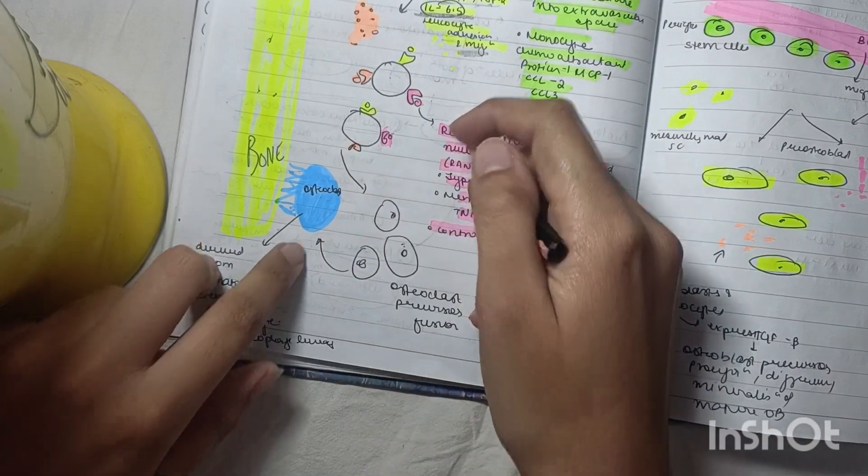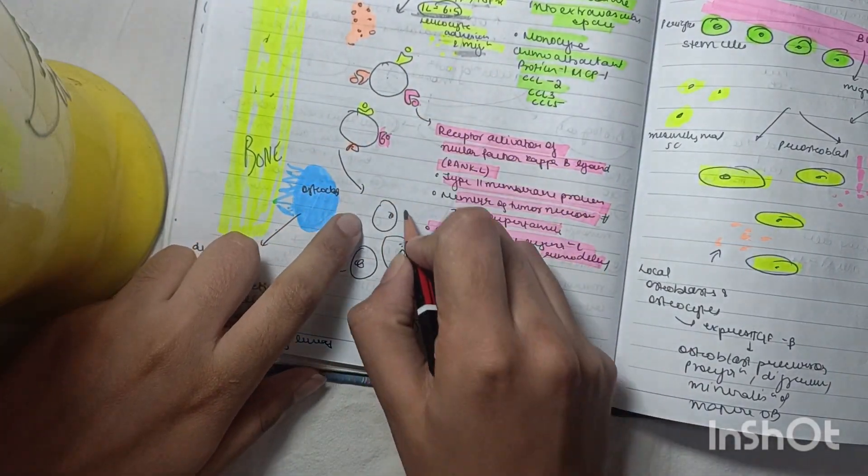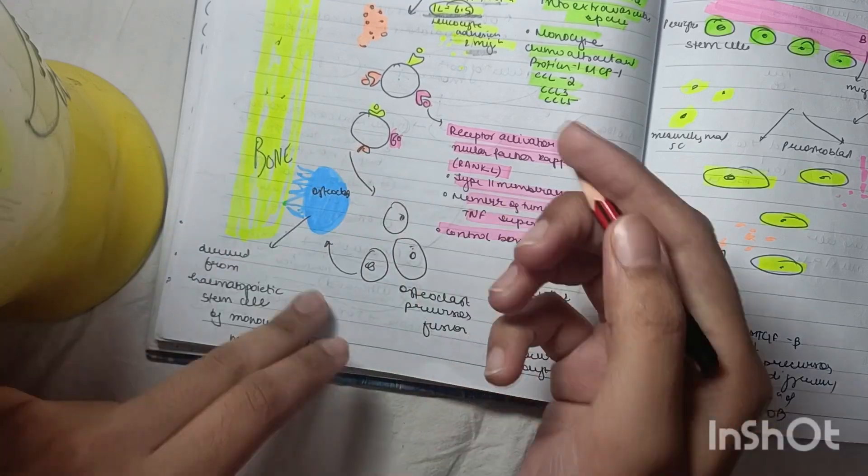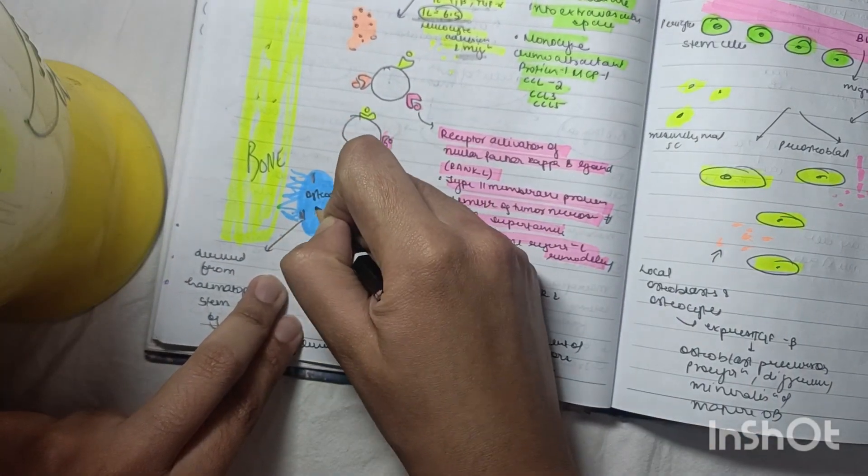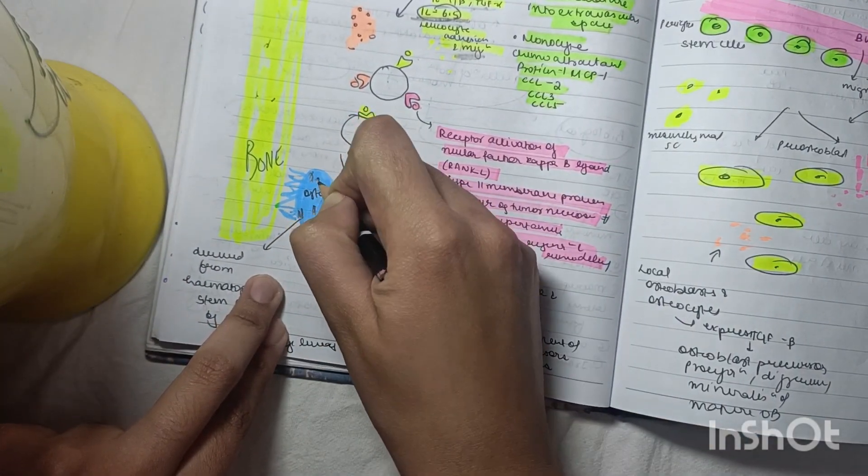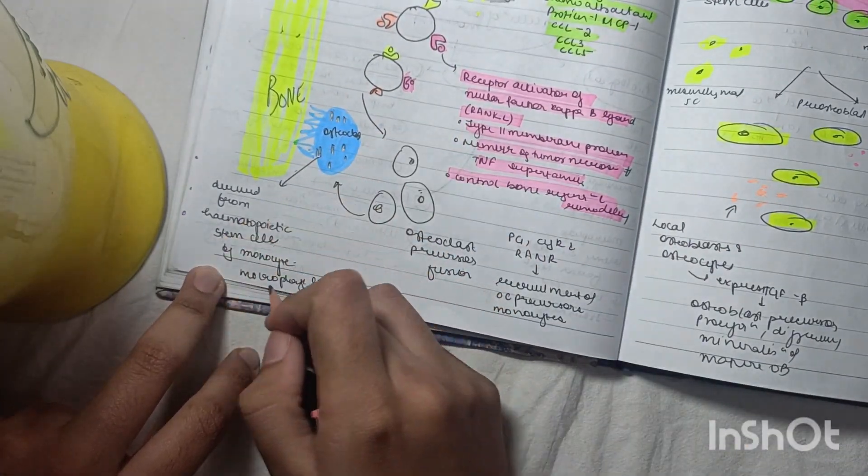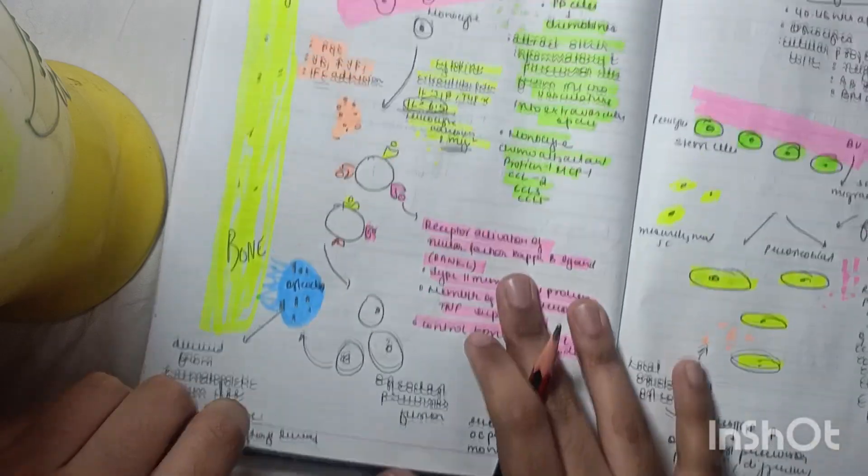When all mediators attach, osteoclast precursors fuse with each other, forming an osteoclast - a multinucleated giant cell with around 12 or more nuclei. This is derived from hematopoietic stem cells of the monocyte-macrophage lineage, leading to bone resorption.